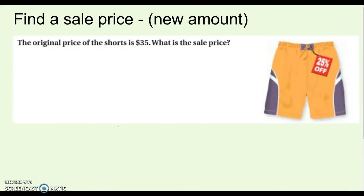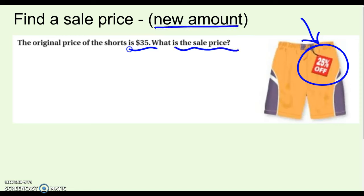Here's our first example — we're going to do four examples together and there's a spot on your notes for each one. Find the spot that says the example with the shorts: finding a new amount. The original price of the shorts was $35. What is the sale price if they're 25% off? Well, I know what it started as, I know how much it's going to change, and I'm looking for the sale price. This is just a new amount problem we've already done — it has two steps. I'll use the equation this time.